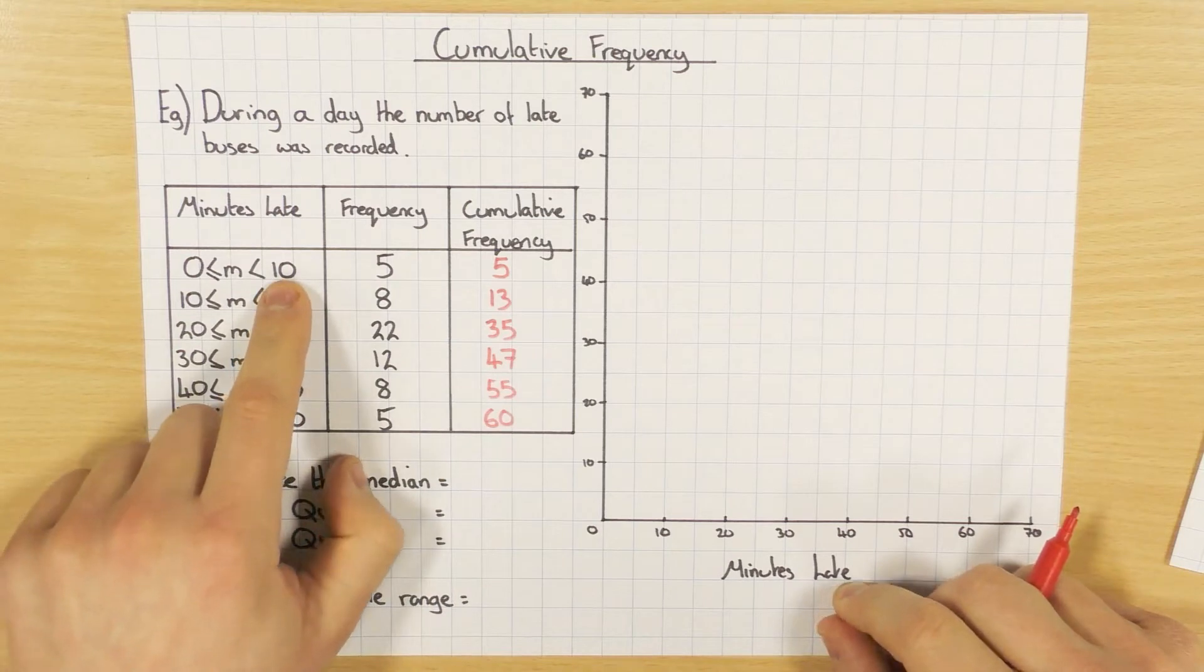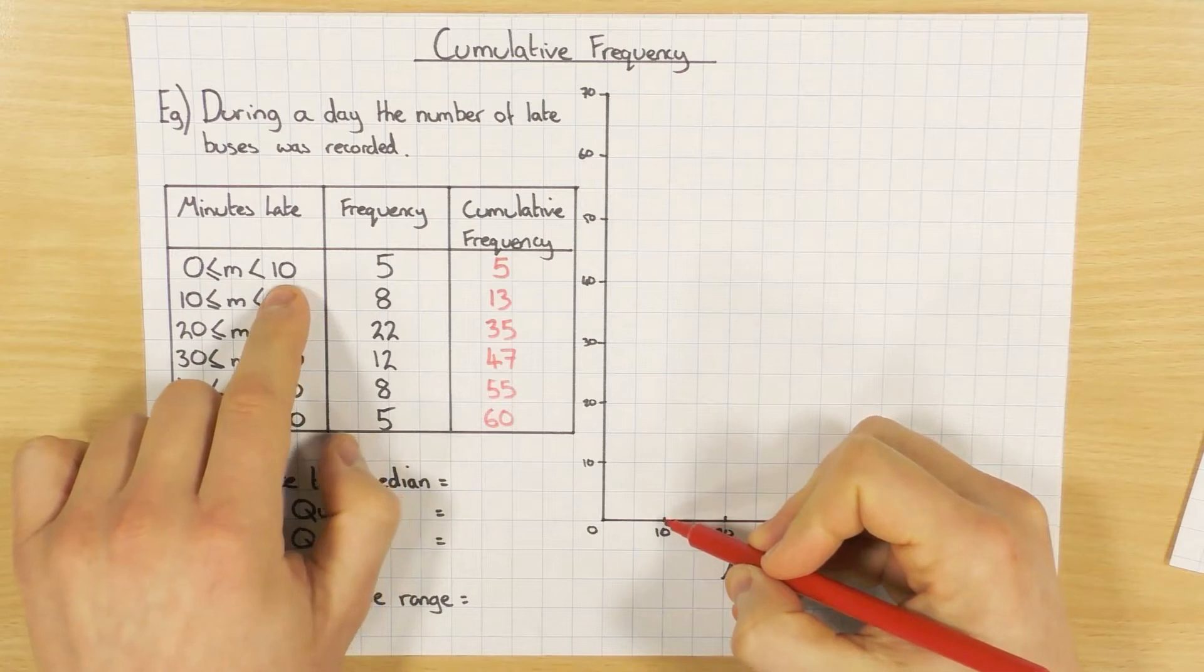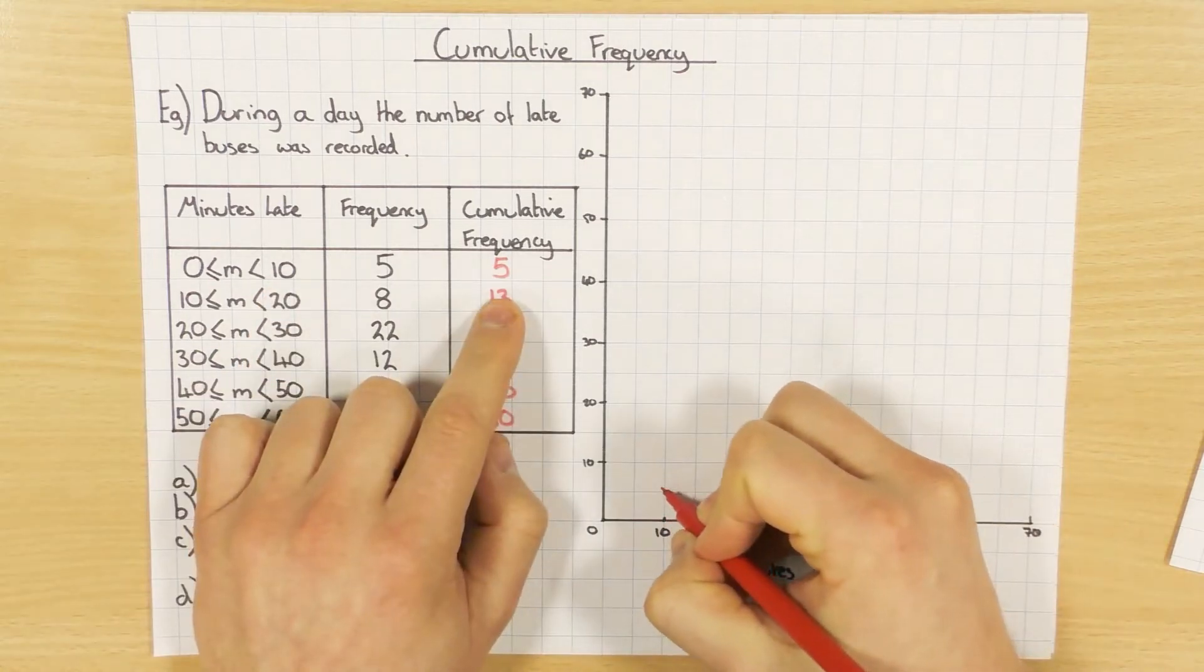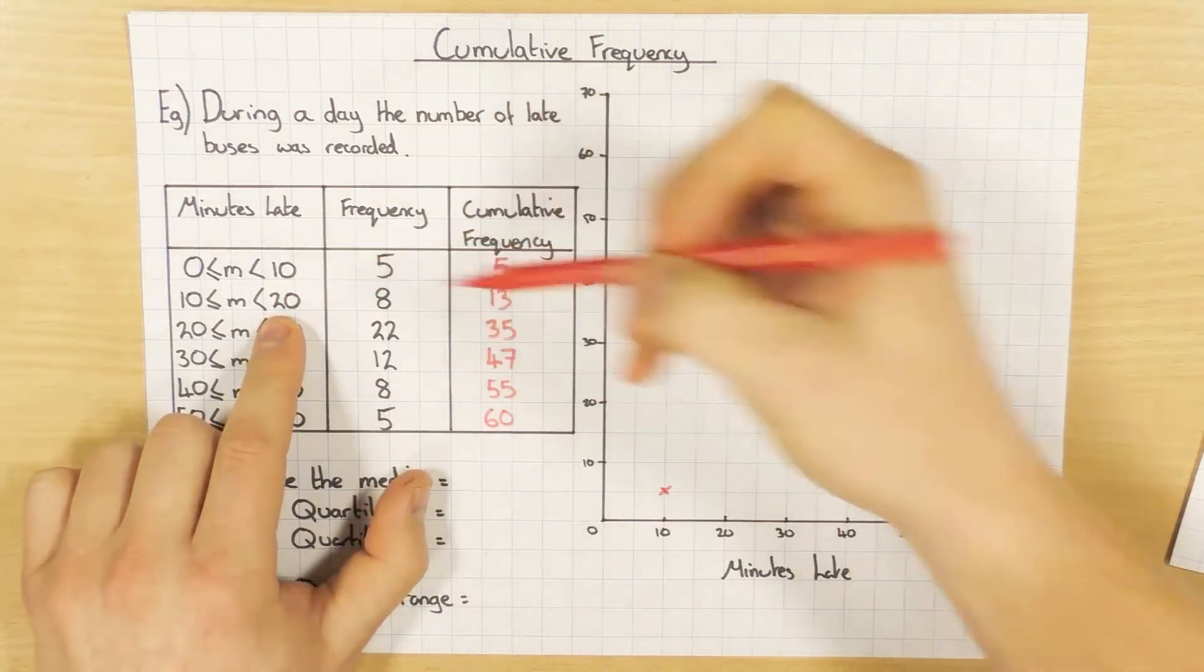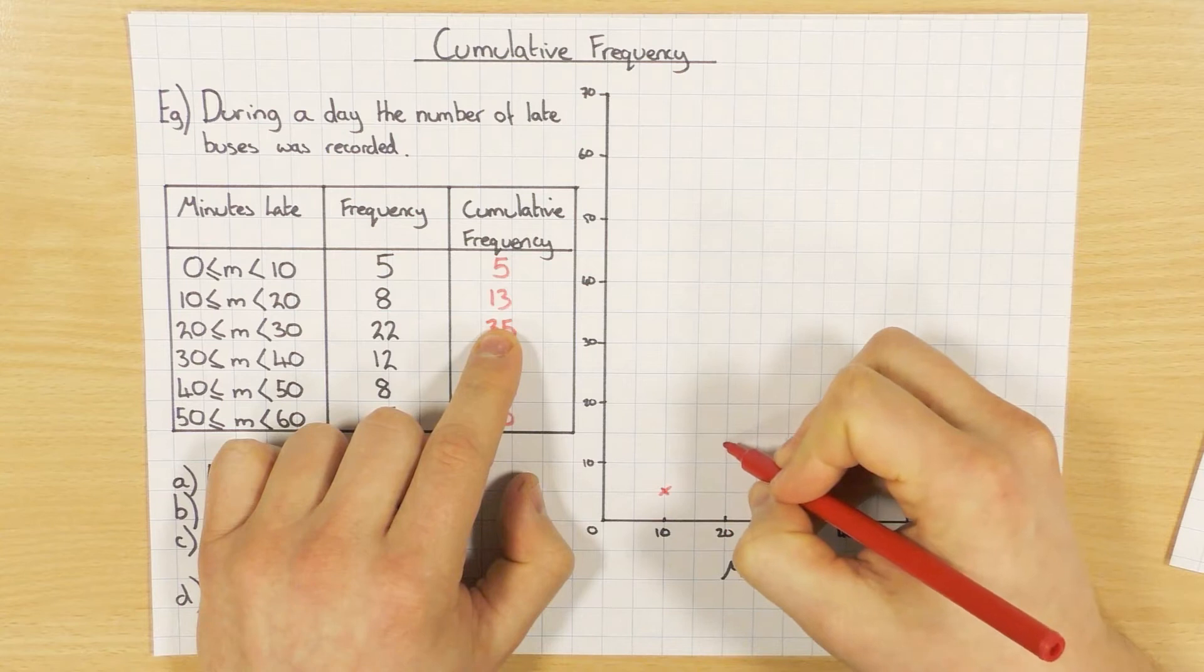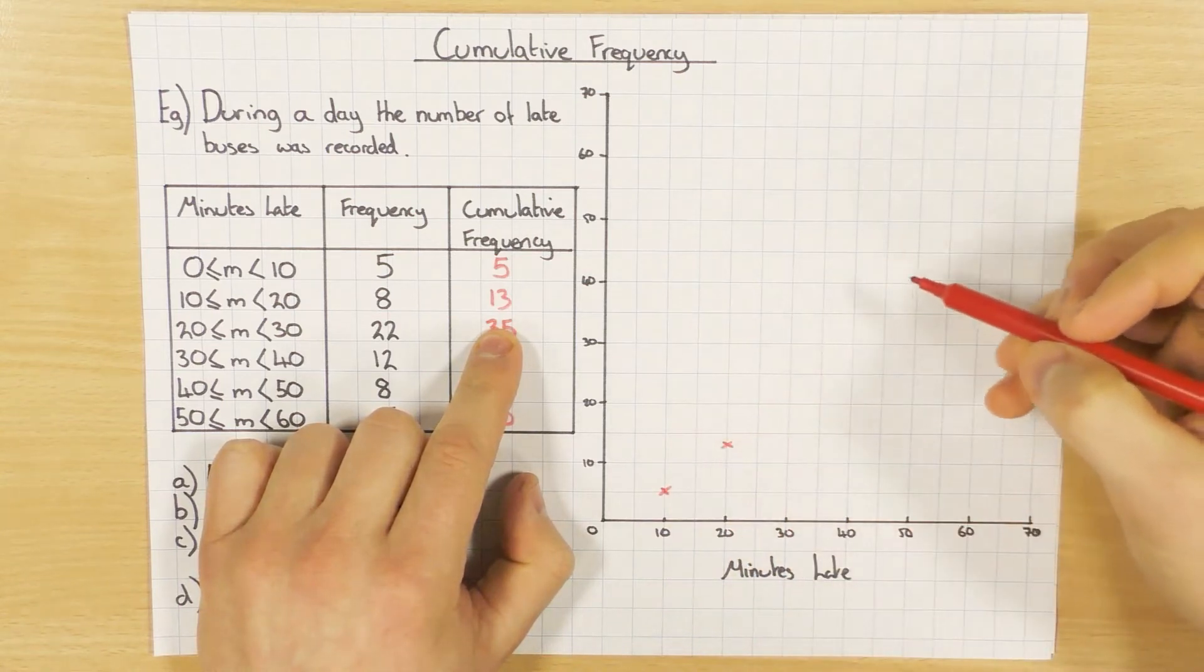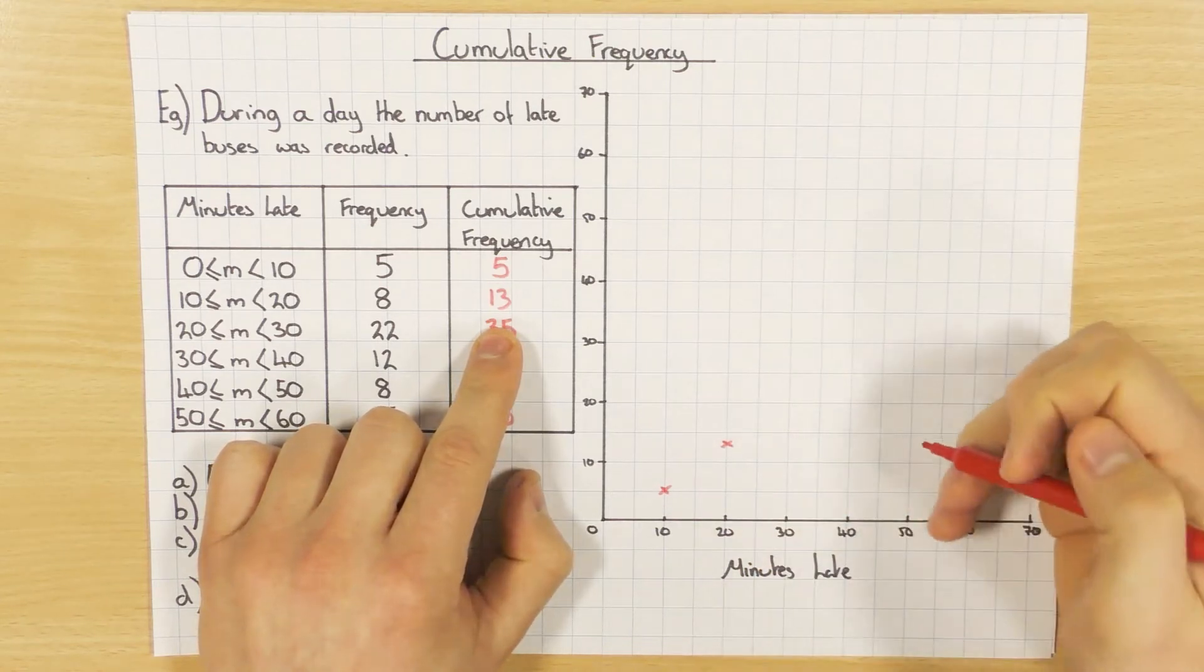So I'm going to be plotting 10, and the cumulative frequency is 5. So there's 10 for minutes late, which is the upper limit, and I'm going to plot 5. So there we go. Next one, upper limit is 20, and it's 13, so roughly about there. Now obviously when you do this in the exam, you'll have the actual graph paper, so you'll be able to do this a lot more accurately than I'm doing right now. But you get the idea.